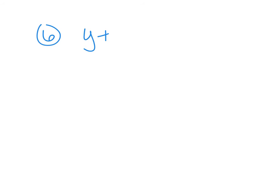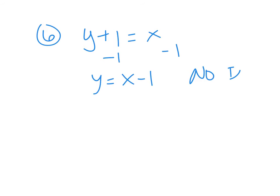Number six: y plus 1 equals x. How do I get y by itself? Minus one from both sides. I get y equals x minus 1, because you can't combine those terms. Is this direct variation? No. Why not? Because it has the y-intercept in the back, not at zero. It has to go through the origin. If I had y equals x, that would be direct variation. But if it's ever not plus zero, if it's anything other than that, it's not direct variation.